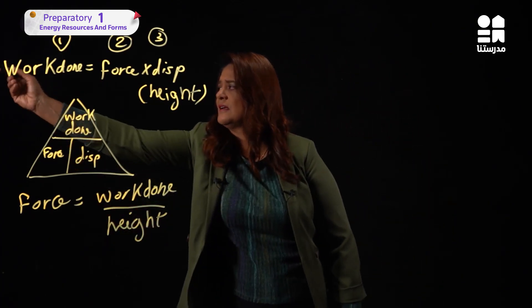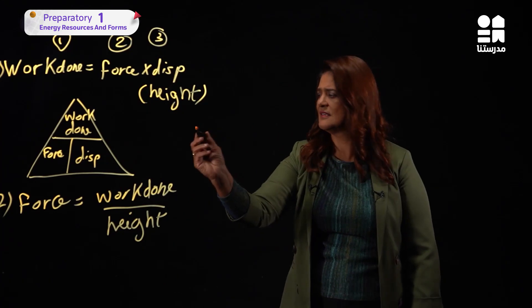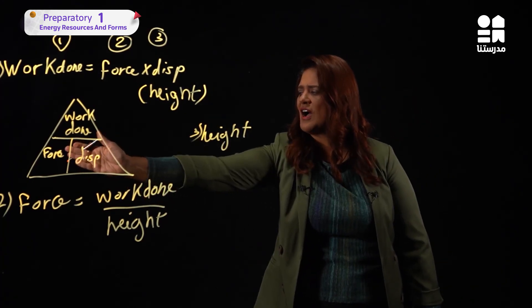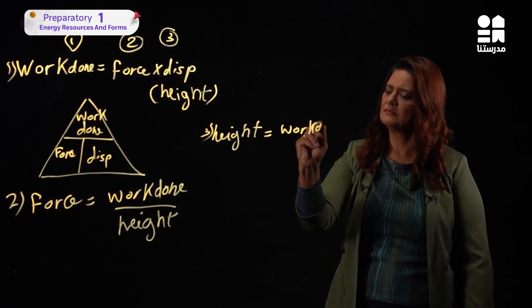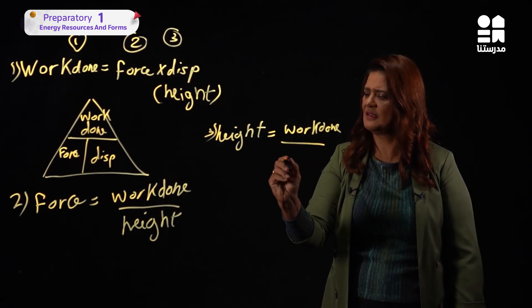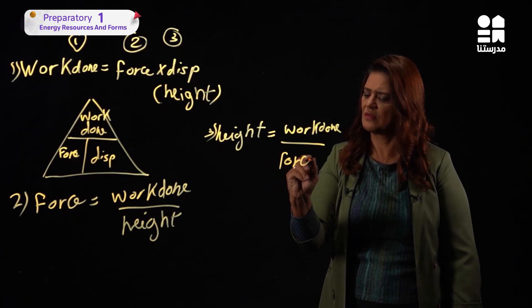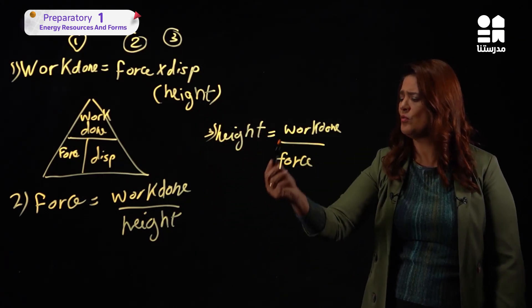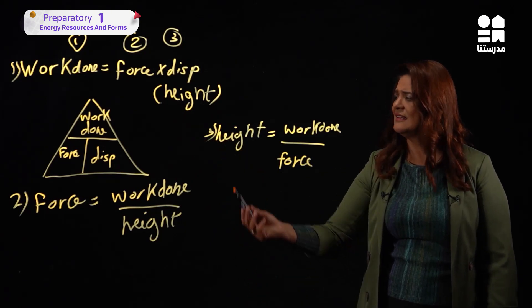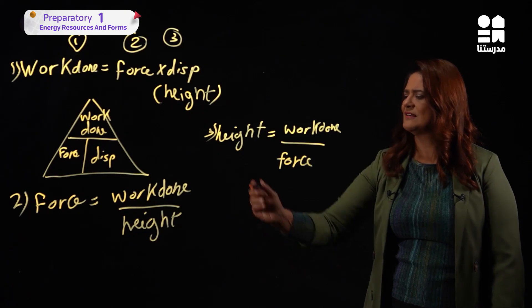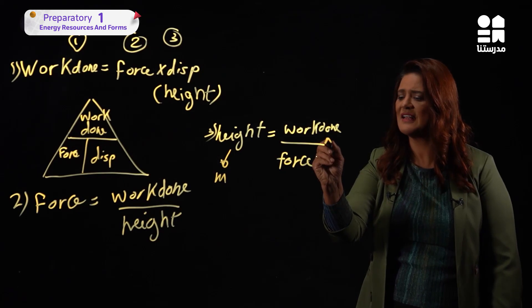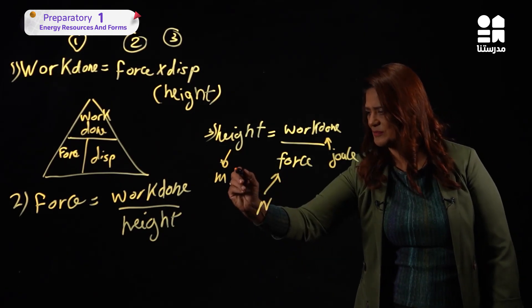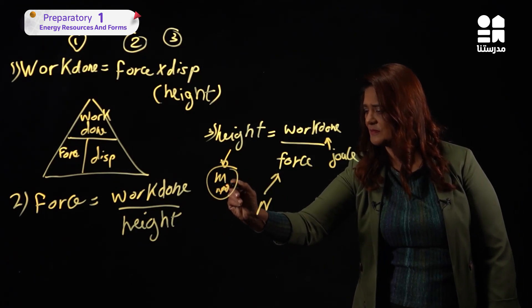So using the triangle I can find any one of the three items. Now, what are the units? Height is measured in meters. Work done is measured in joules. What about force? Force is measured in newtons. So I have meters and newtons as units.